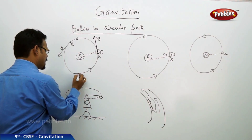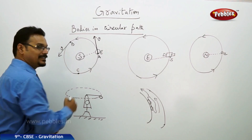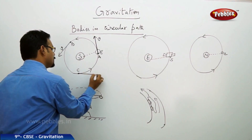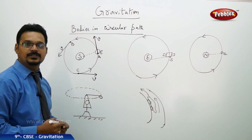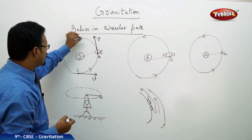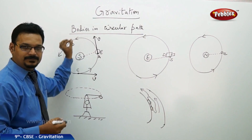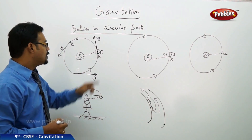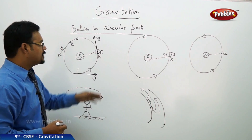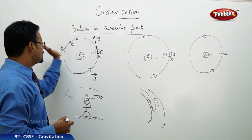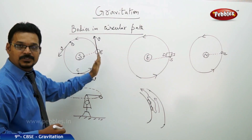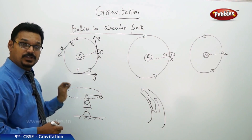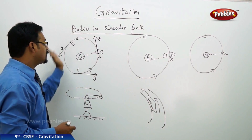At point C, use the same method — draw a tangent; V is the velocity. At each and every point on this path, if you want to know the direction you need to draw the tangent. If you look at all the tangents, they are changing their directions at each point, and this confirms that the body is moving in a circular path.